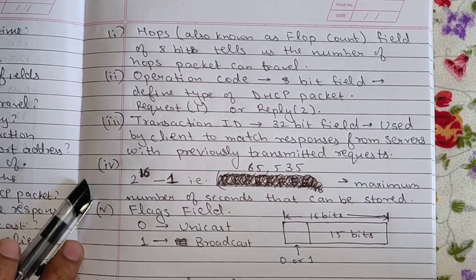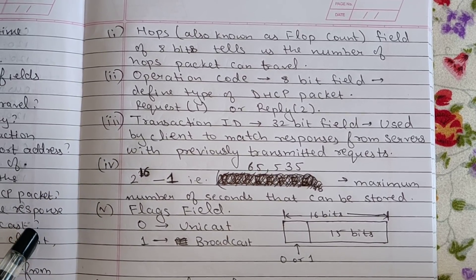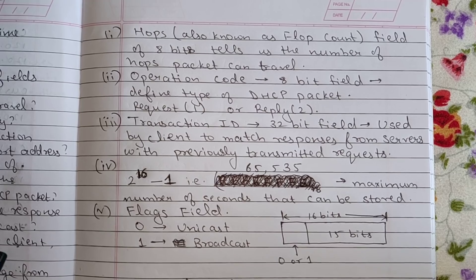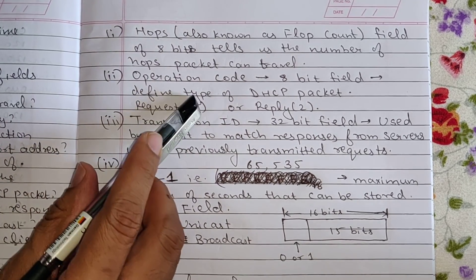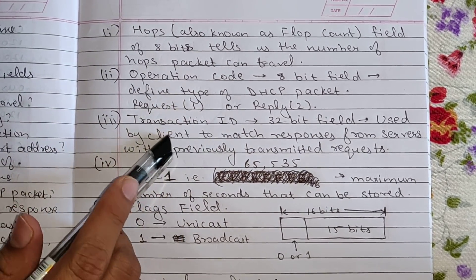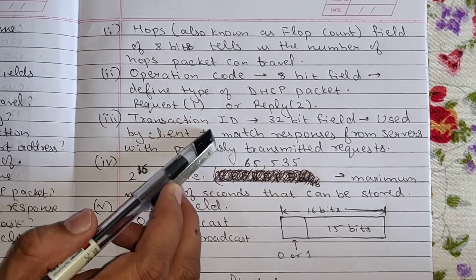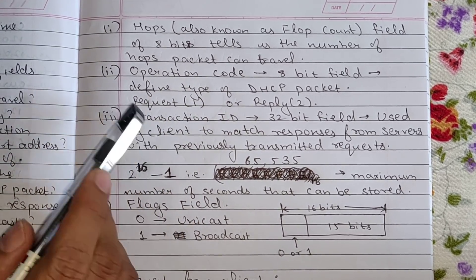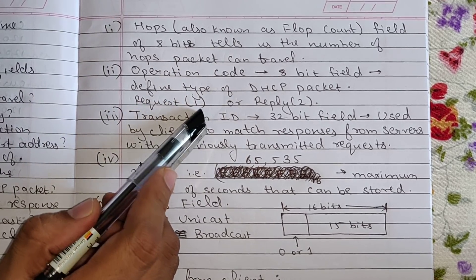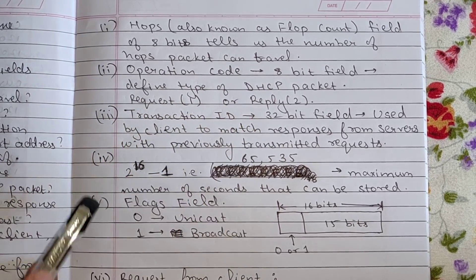The next question was the command is request or reply. So the operation code field, which is again an 8 bit field, it defines the type of DHCP packet, either it's a request so it will be 1, or it's a reply then it will be 2.